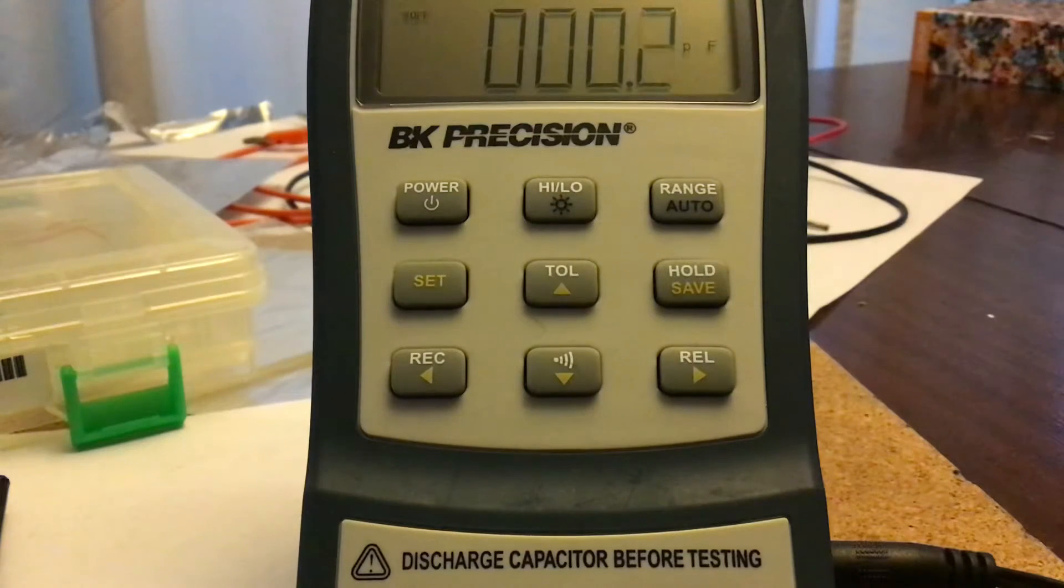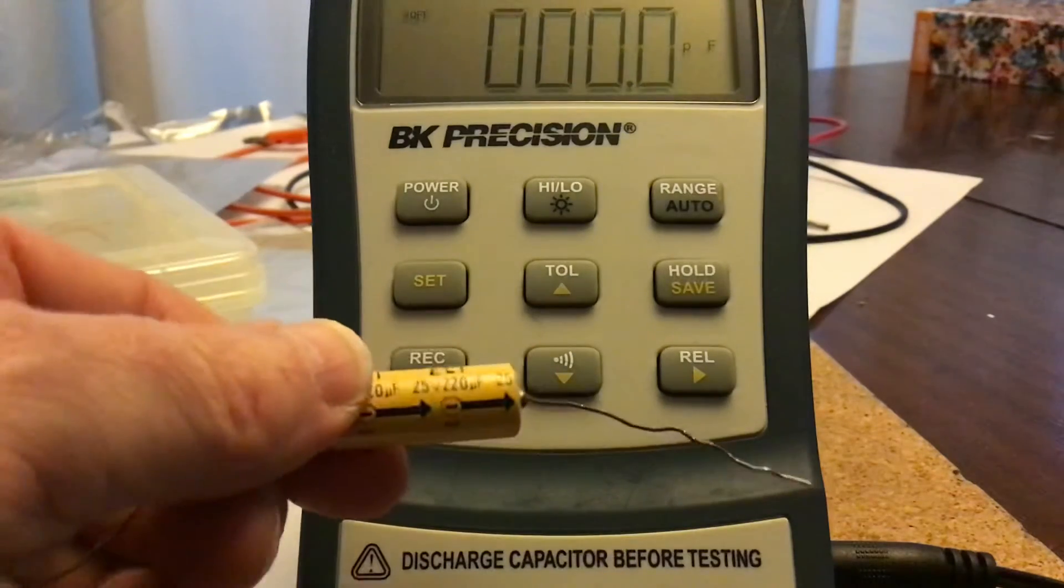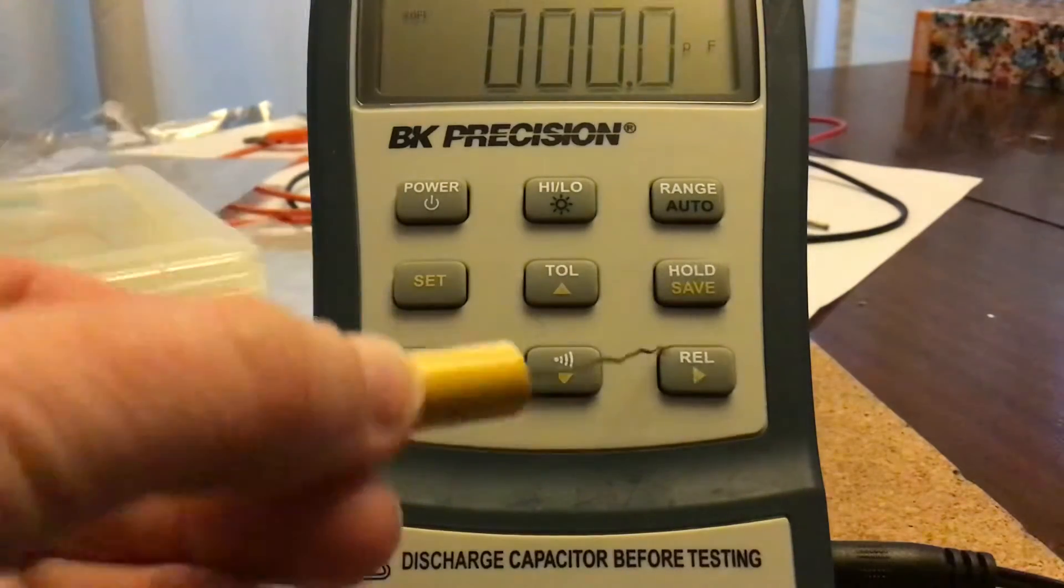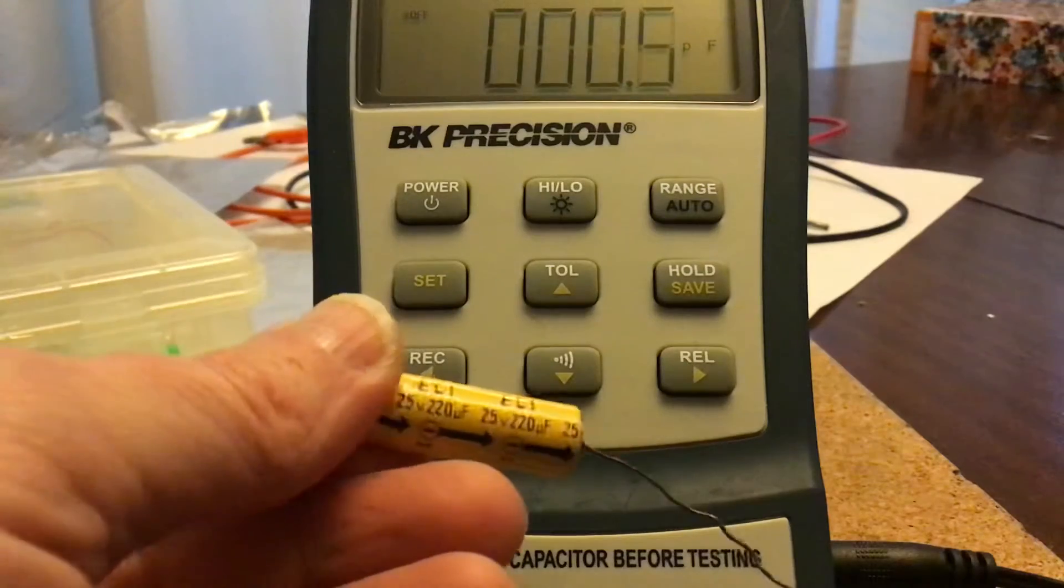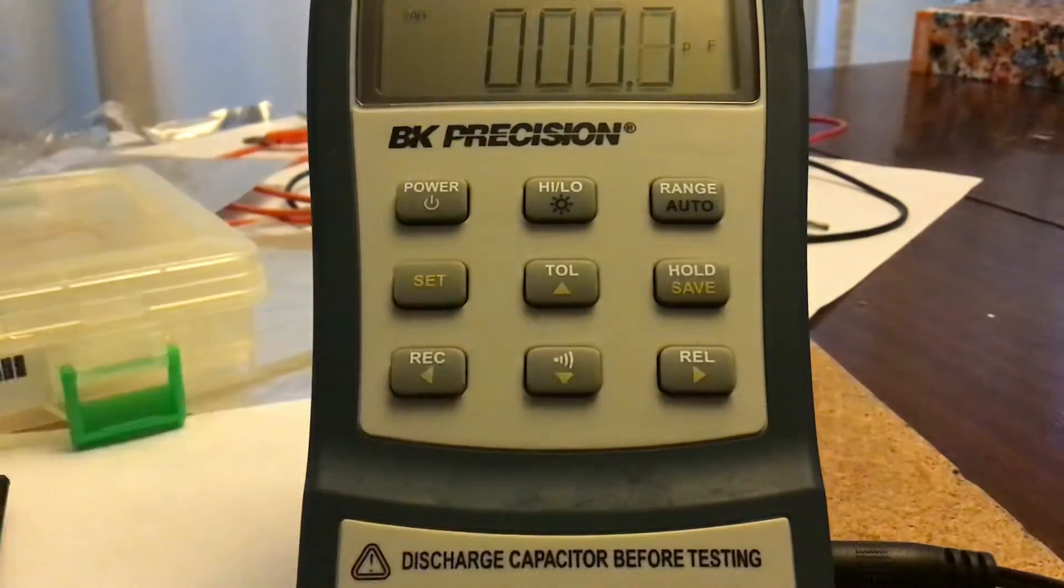So for the yellow one, the tolerance, if it doesn't say it, then it's going to be plus or minus 20%. And this does not say the tolerance of it, so plus or minus 20 is fine for that one. See, it's within plus or minus 20.